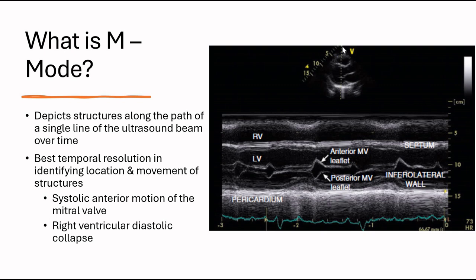Here is a picture of the M-mode through the mitral valve. Up here is the skin, this is the RA free wall, and the space is the right ventricle. Here we have the septum which is labeled here, and then the LV, and within the mitral valve we have anterior mitral valve leaflet which is pointing to this area, and the posterior mitral valve leaflet is this area, and down here is the inferolateral wall, and then we have the pericardium at the end.